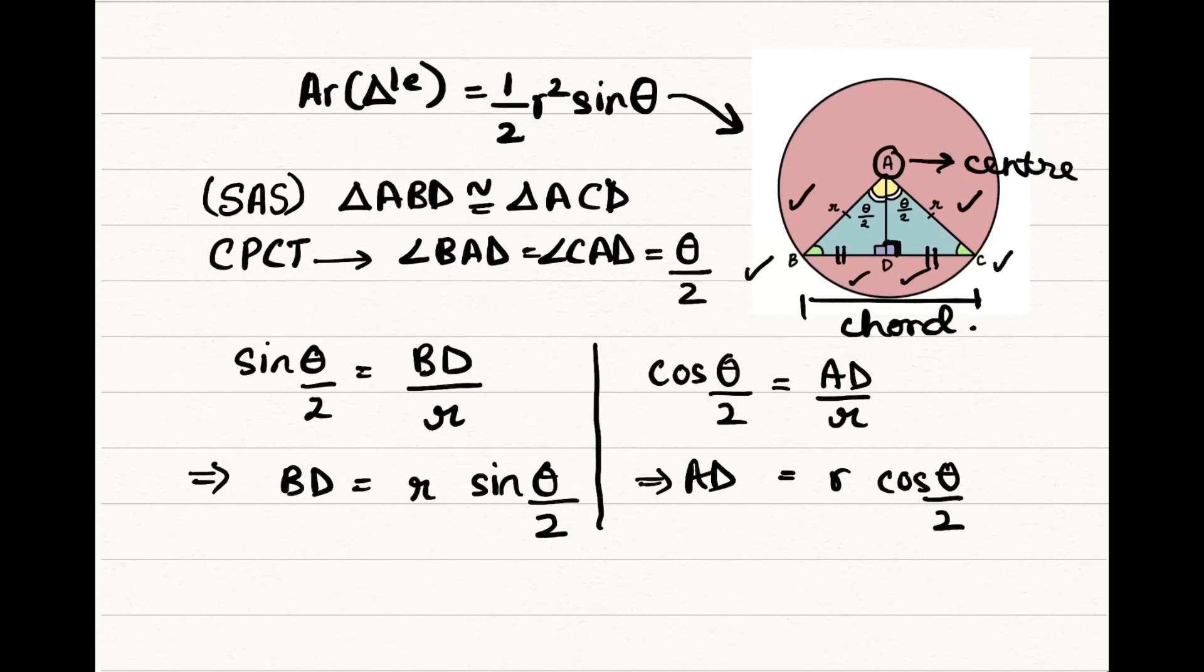We all know that BD is equal to CD. So BD plus BD is equal to BC.